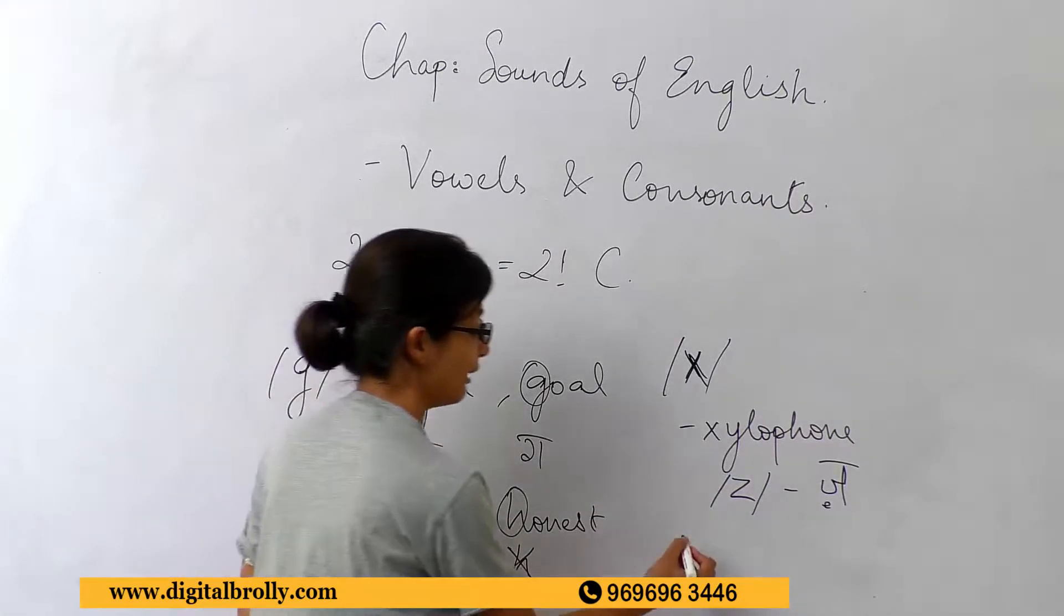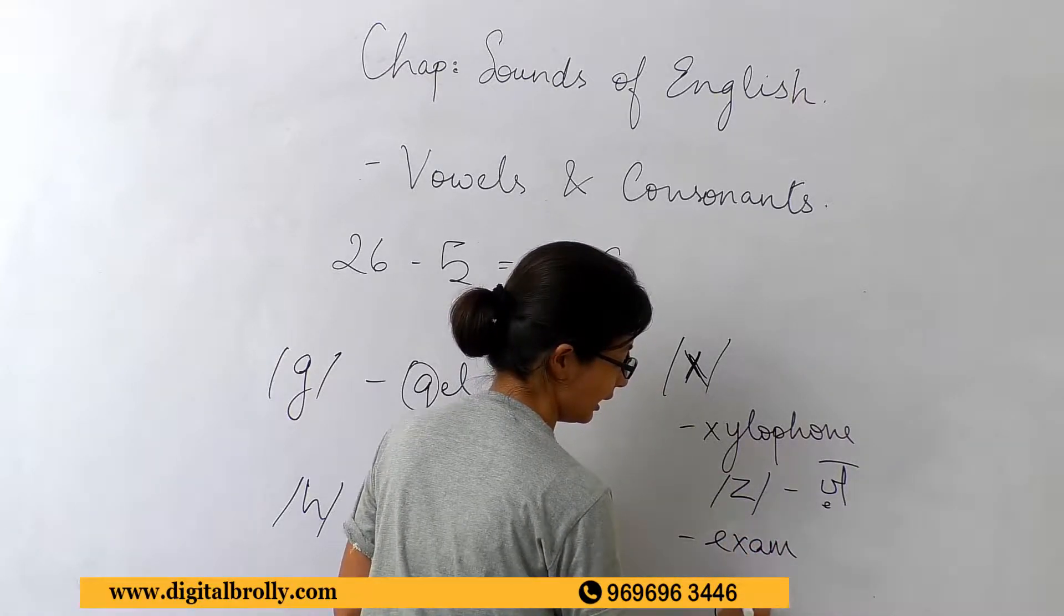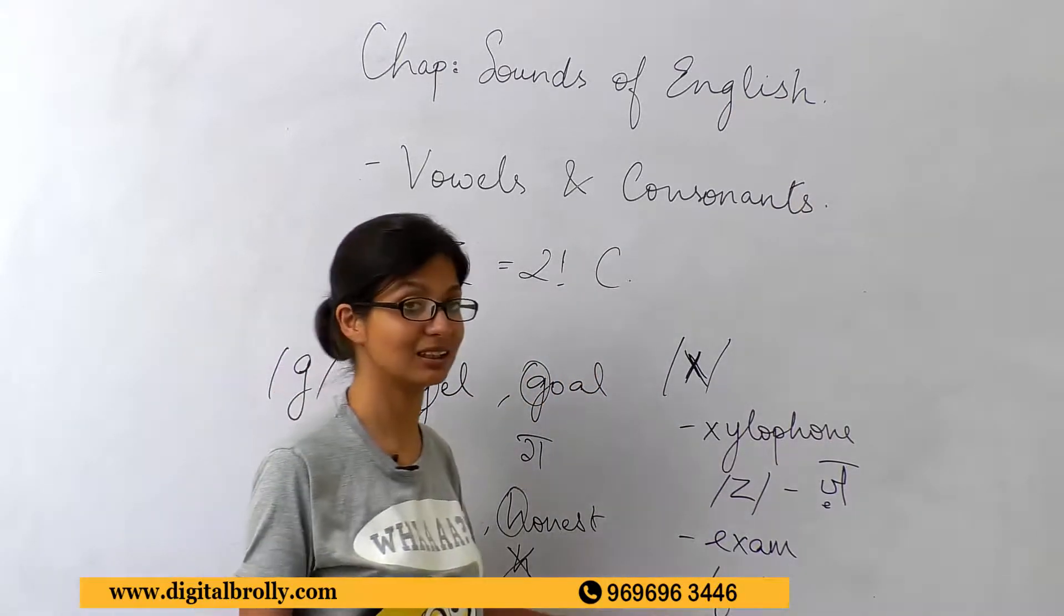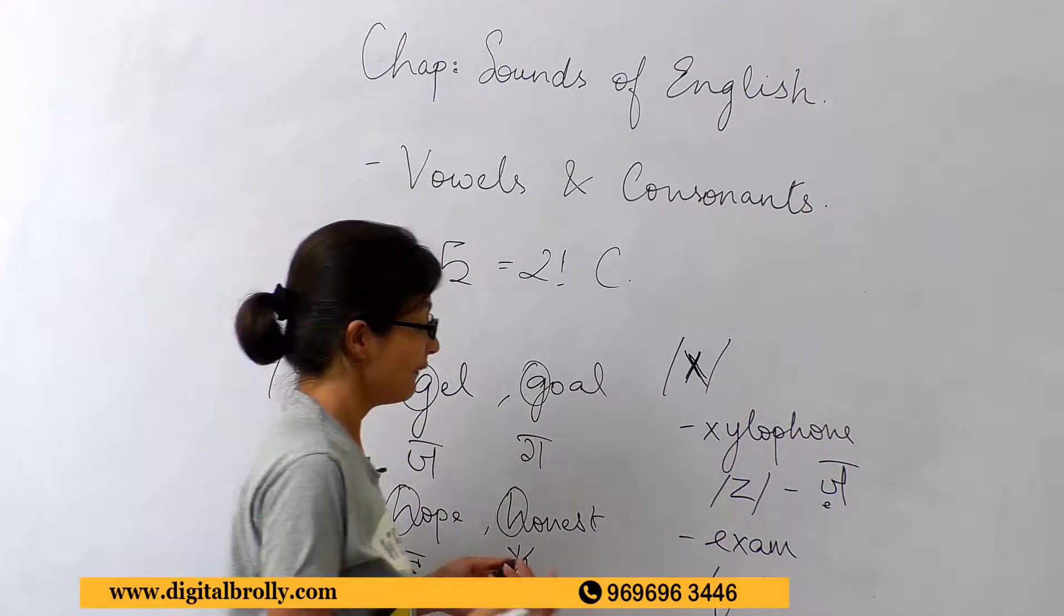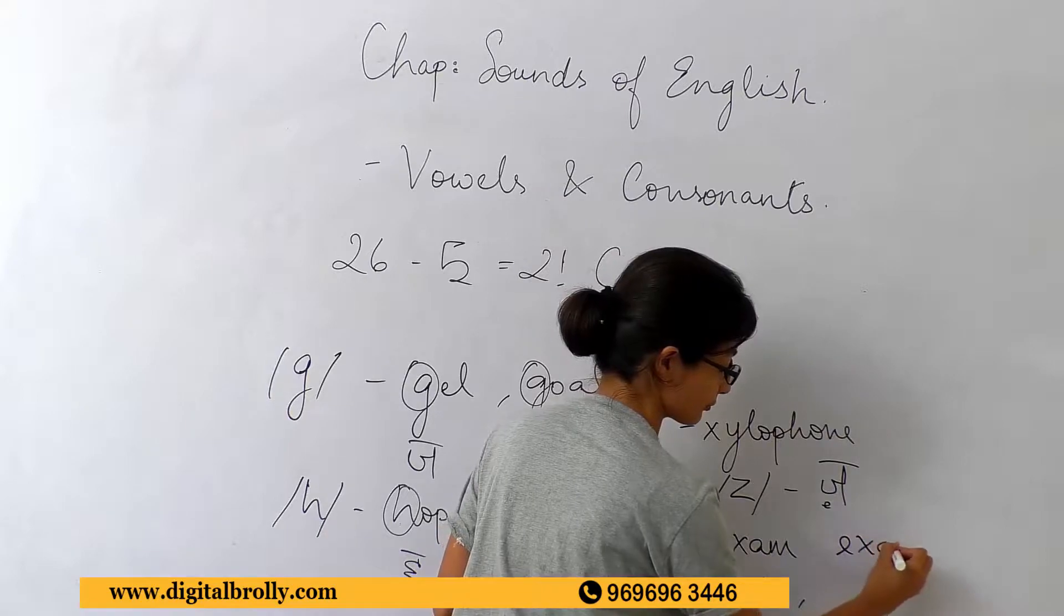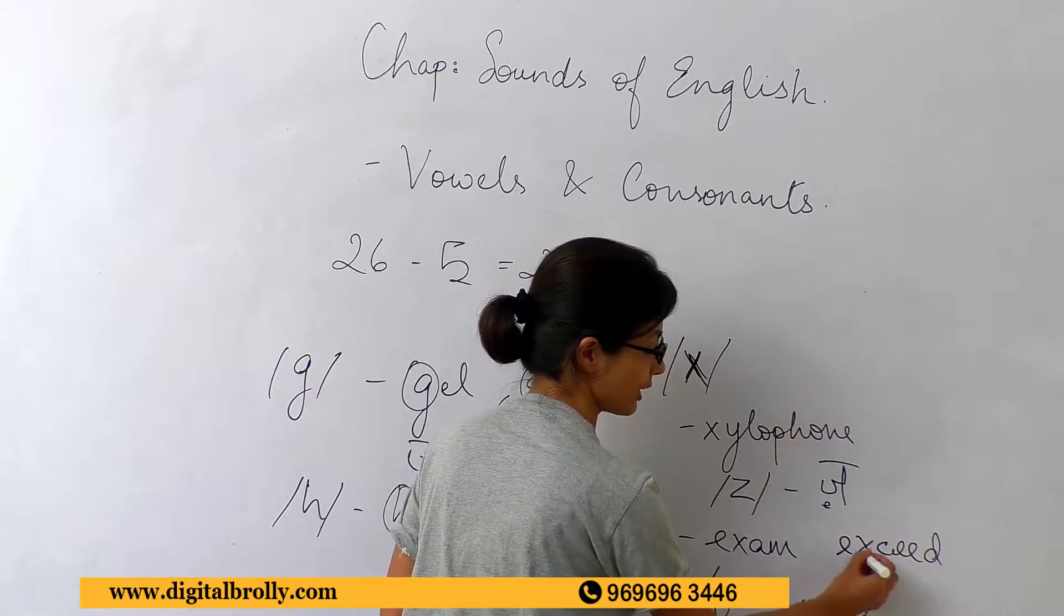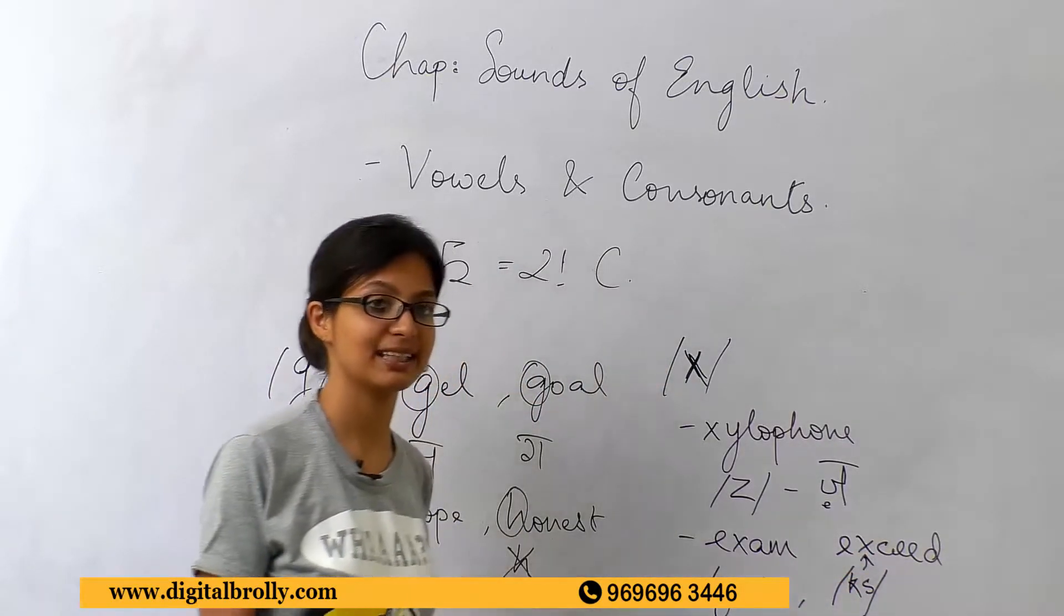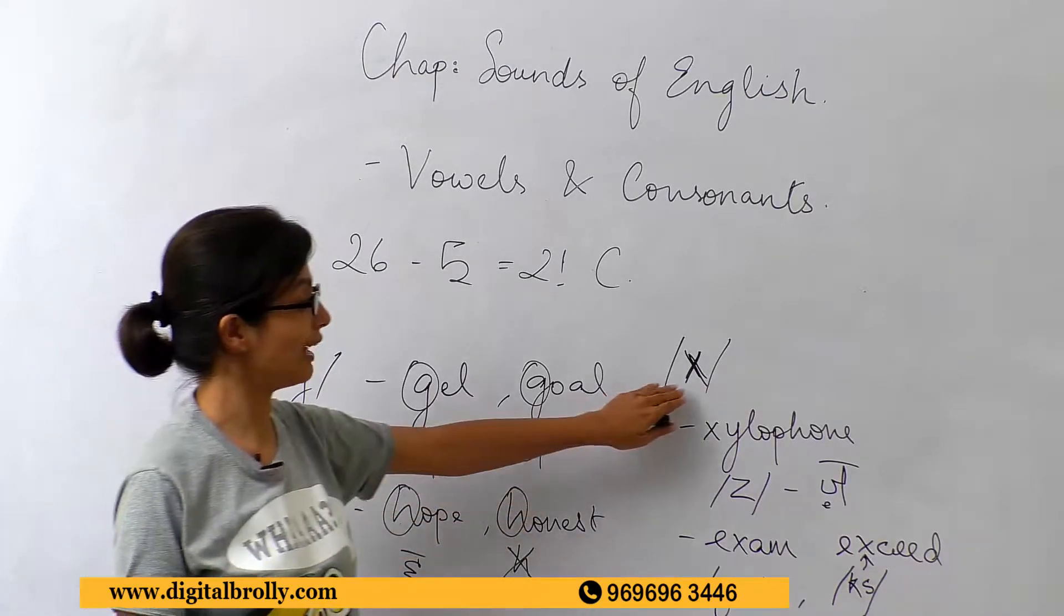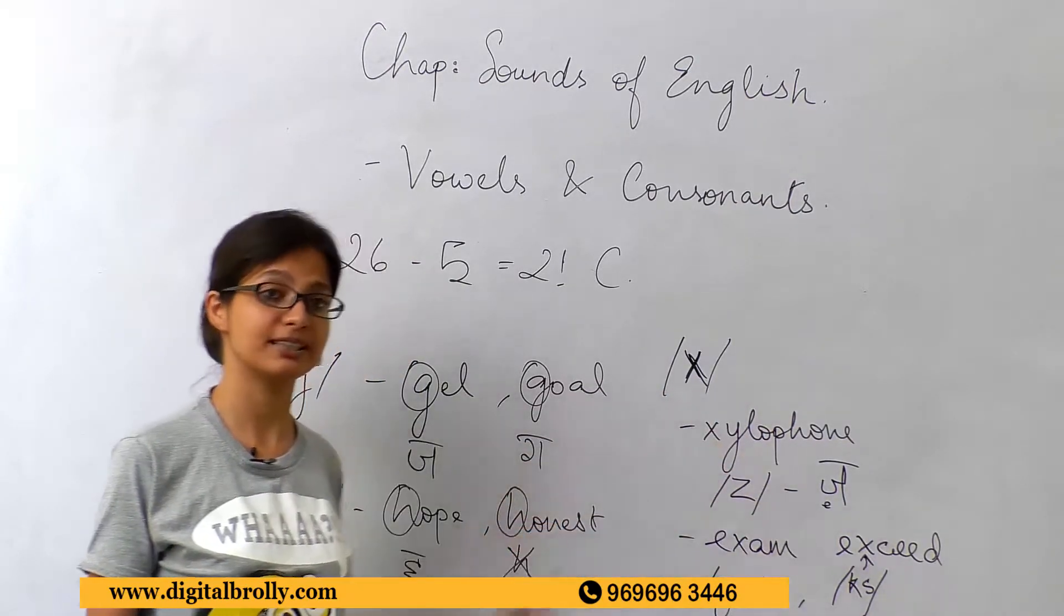Then you have exam where you have a G and a Z. It is exam. So it is G and a Z together. Then you might have a sound like exceed. So these are certain variations that one alphabet in the English script is showing to have different kinds of pronunciations.